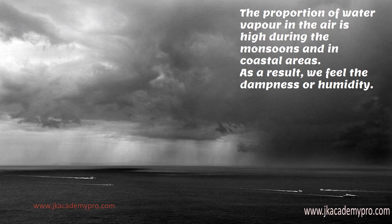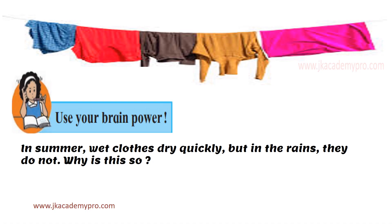The proportion of water vapor in the air is high during the monsoon season and in coastal areas. During the monsoon season, air can hold a lot of moisture, and in coastal areas — areas very close to the seaside — we feel dampness or humidity. Now, use your brain: in summer, wet clothes dry quickly, but in rains they do not. Why do you think this happens?